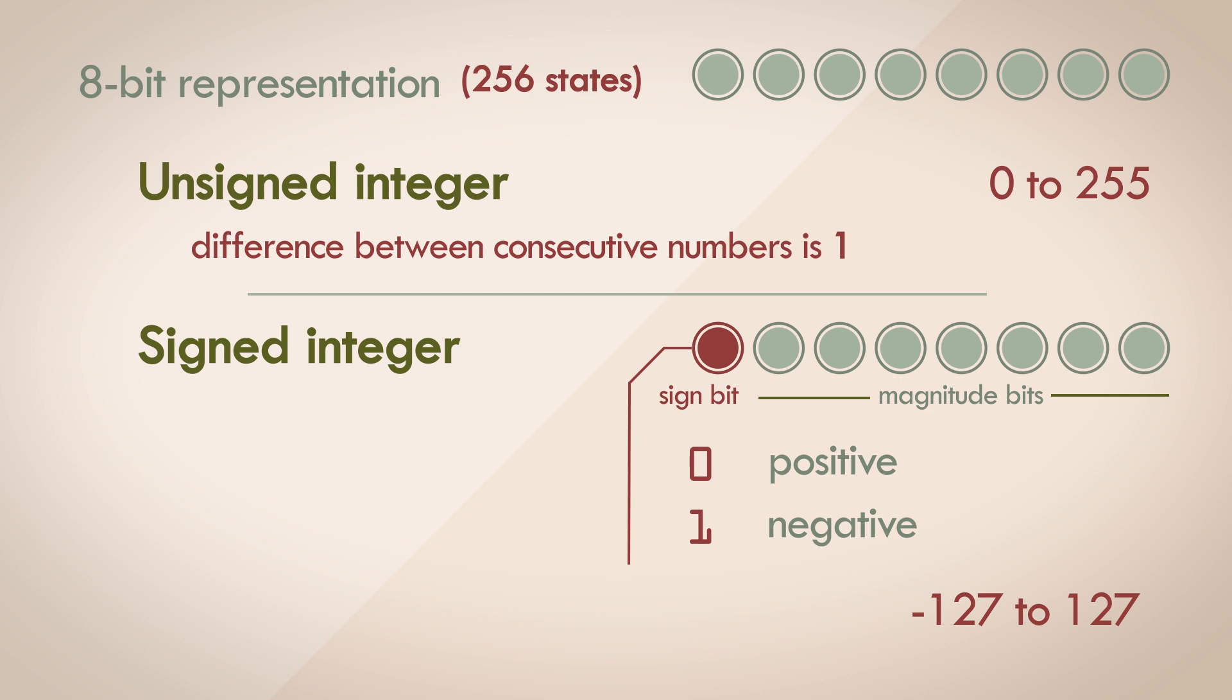This is called the sign and magnitude representation. This may look good on paper and is quite intuitive for us to understand, but it's not really efficient when implemented in hardware. So there is another representation model called 2's complement that's predominantly used everywhere. We'll look at that soon.